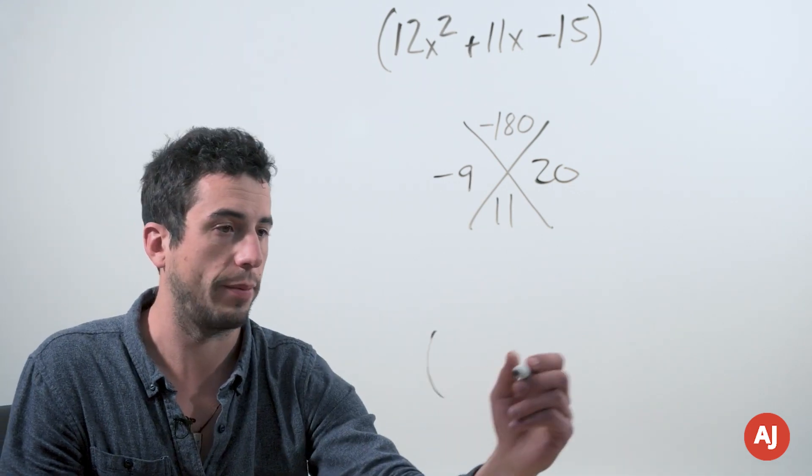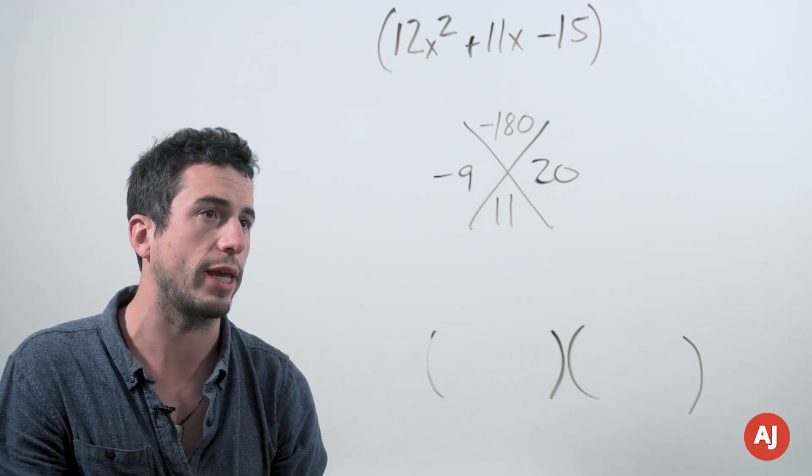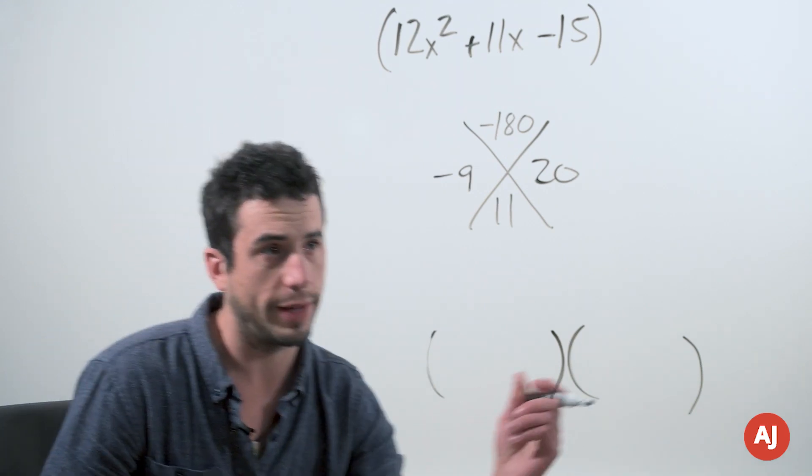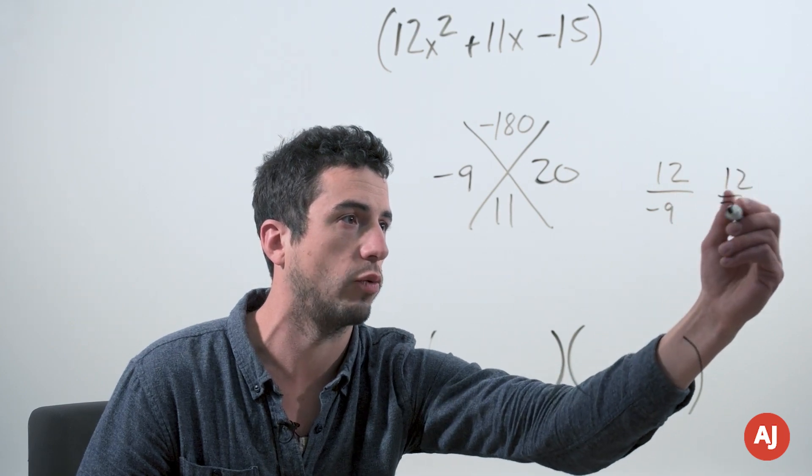Now here's the fun trick step. So we get our two parentheses set up just like normal, but instead of just simply taking the 20 and the negative 9, we need to again consider that leading coefficient 12. We need to make a couple of fractions here: 12 over negative 9 and 12 over 20.